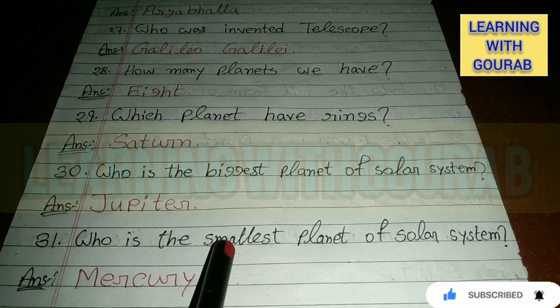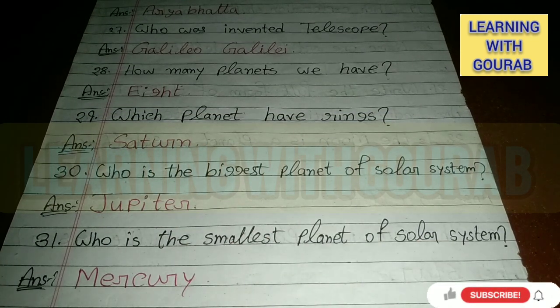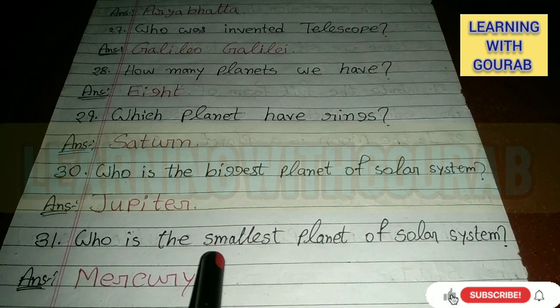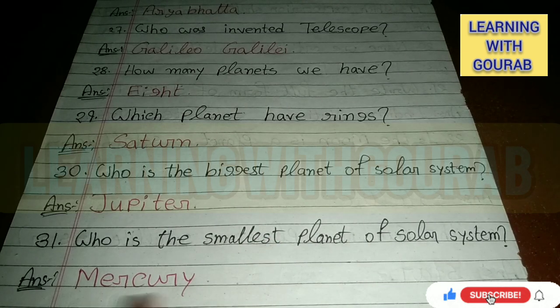Who is the smallest planet in the solar system? Answer: Mercury.